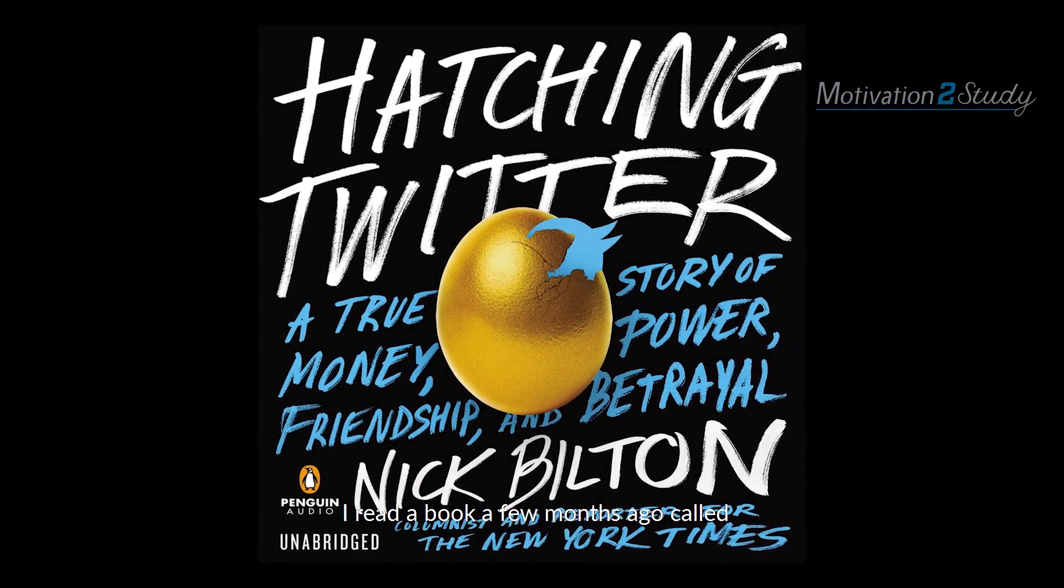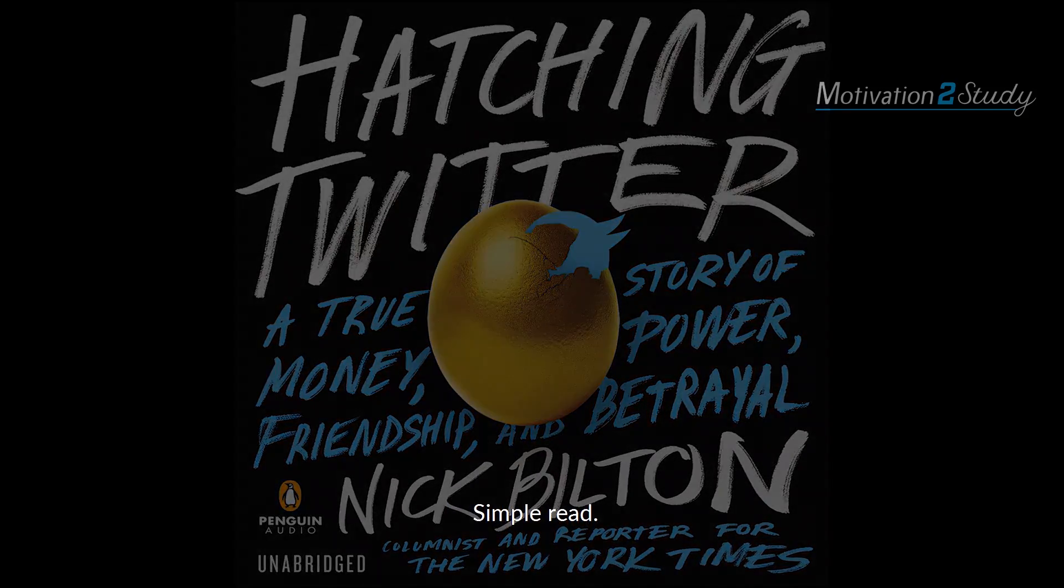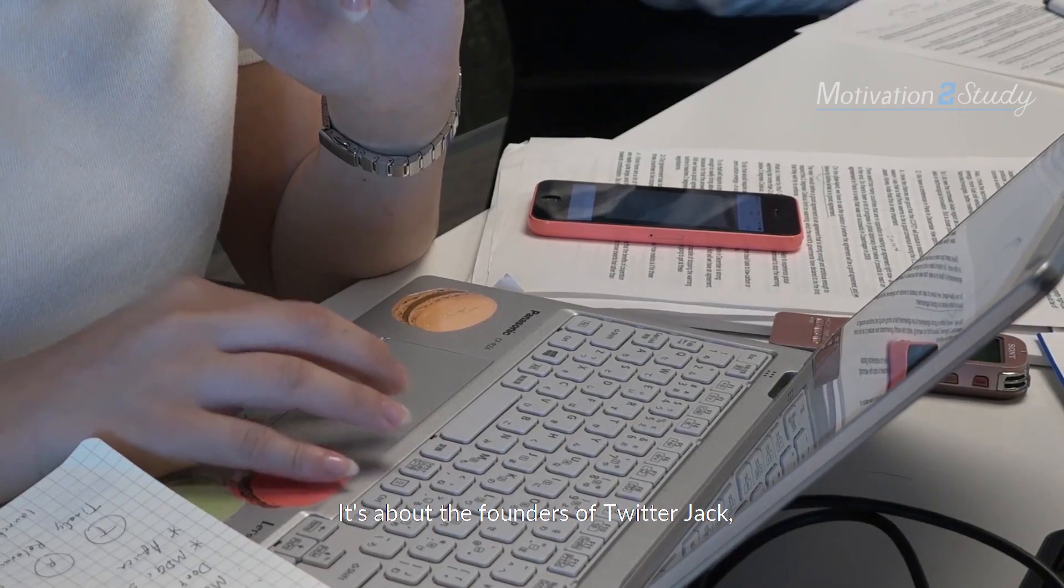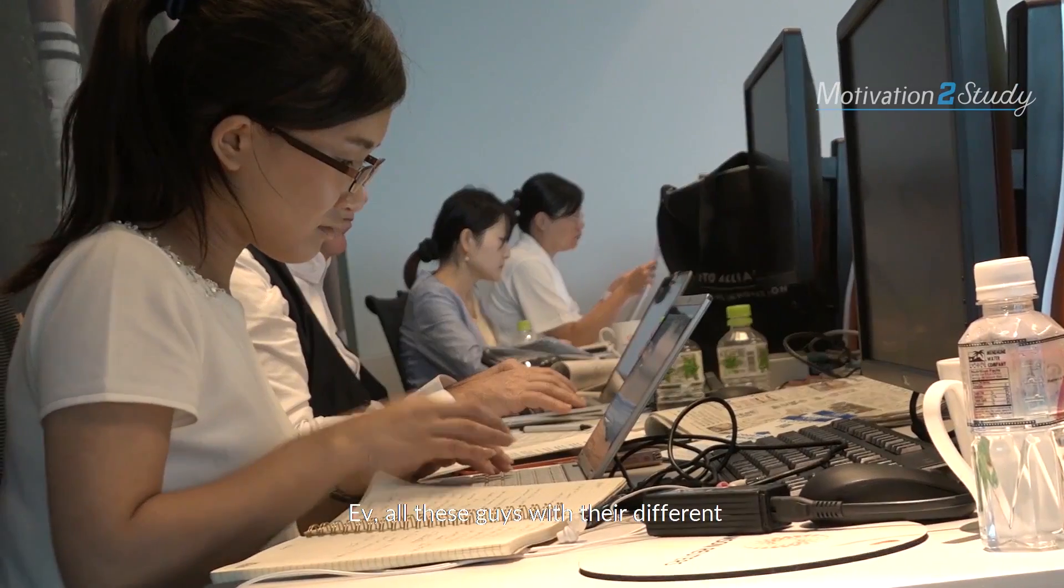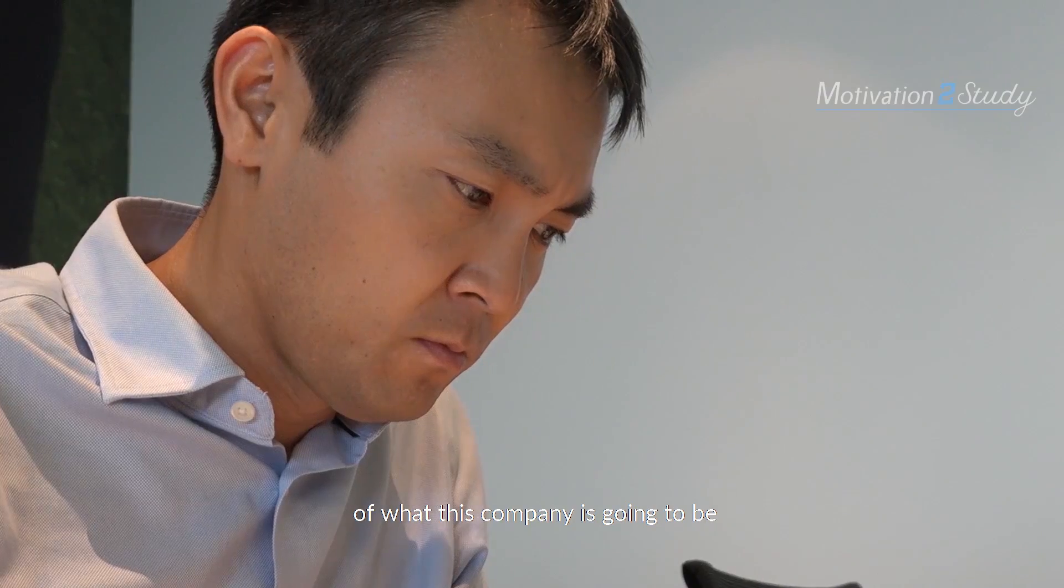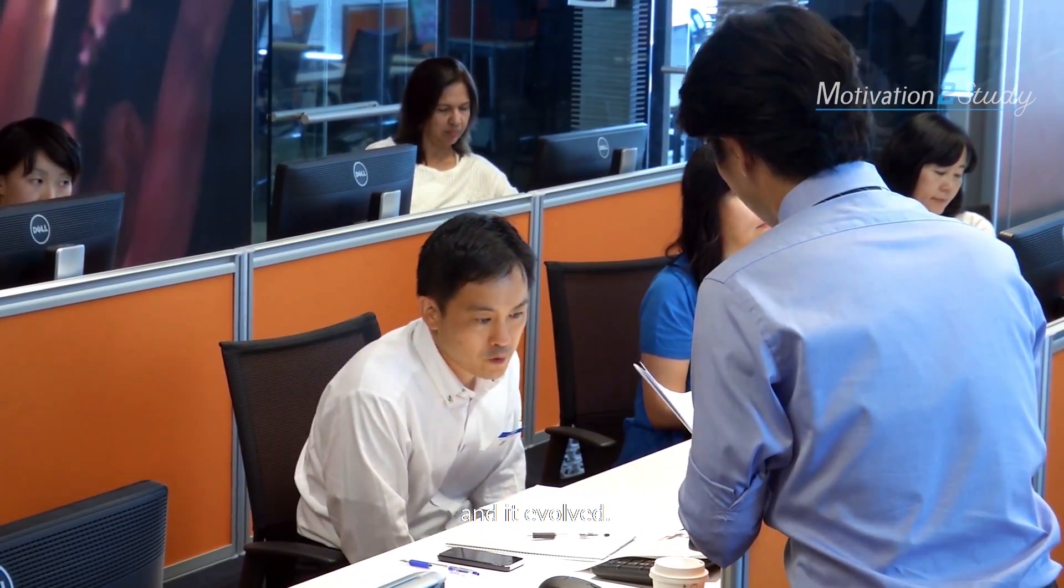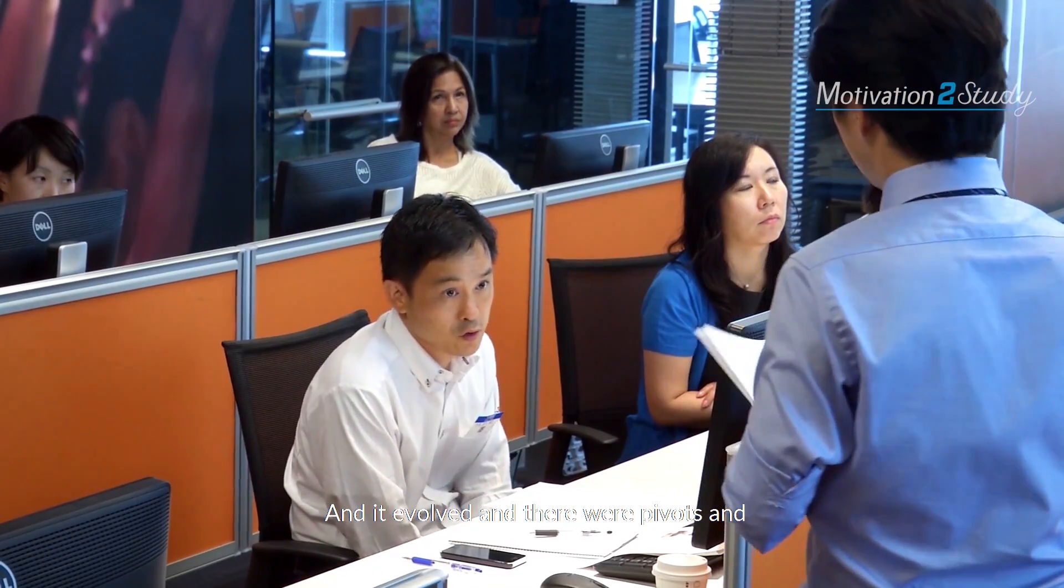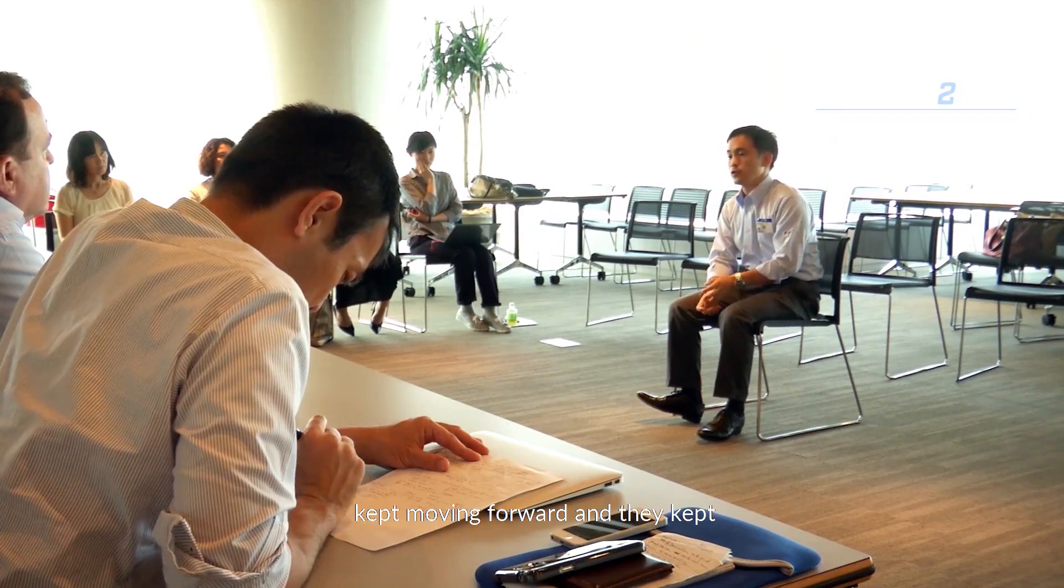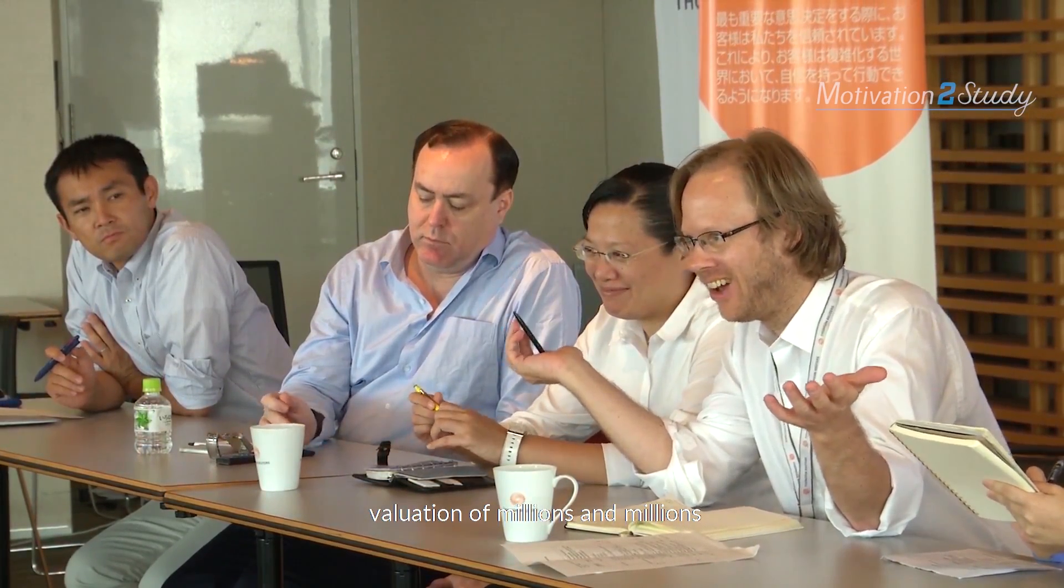I read a book a few months ago called Hatching Twitter. Simple read. It's about the founders of Twitter, Jack, Ev, all these guys with their different ideas and different notions of what this company is going to be. You know, it started out as, I believe, a radio, online radio company. And it evolved, and it evolved. And there were pivots and adjustments and alterations, and they kept moving forward, and they kept growing.